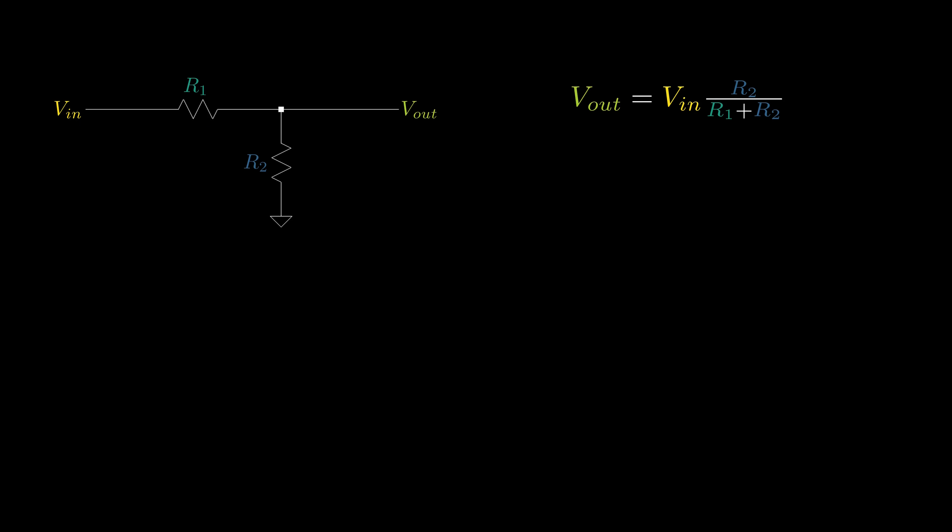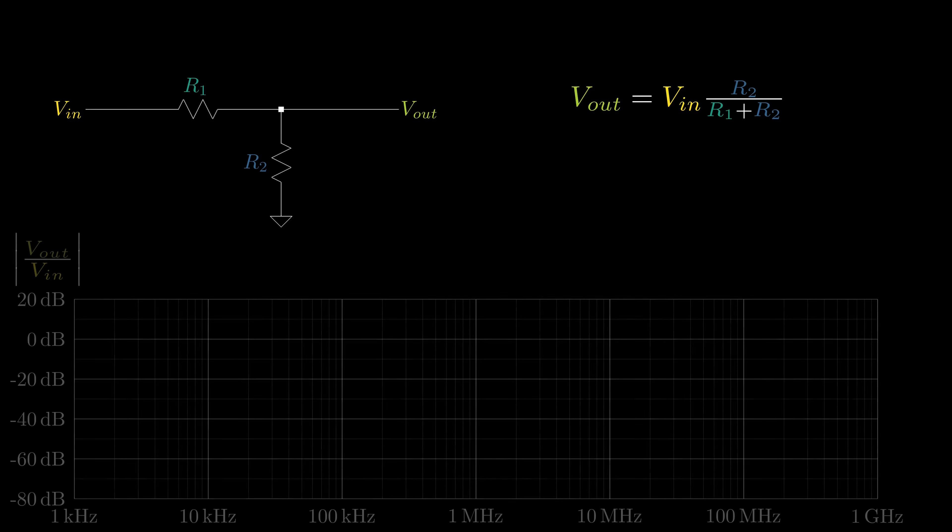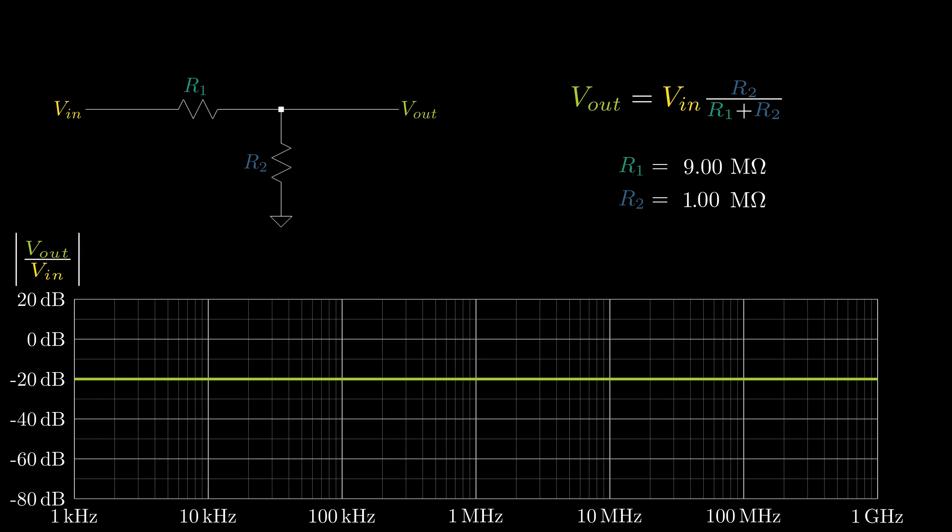Combining these two equations, we get that Vout is Vin times R2 over R1 plus R2. Plotting this transfer function over frequency, we can see that we have constant attenuation over all frequencies.